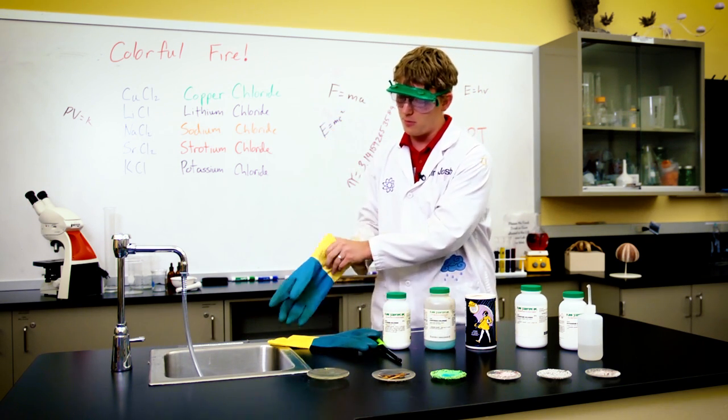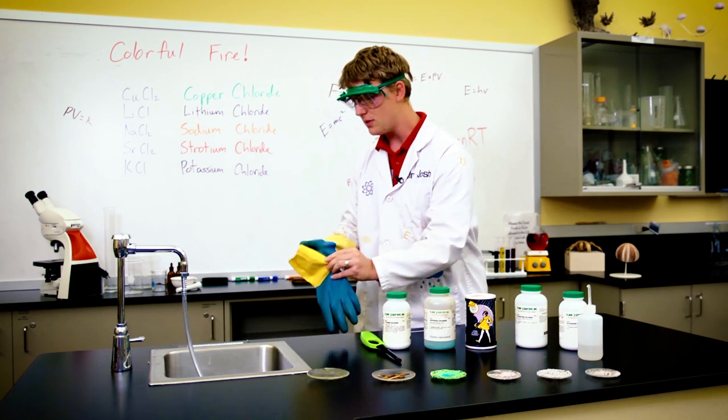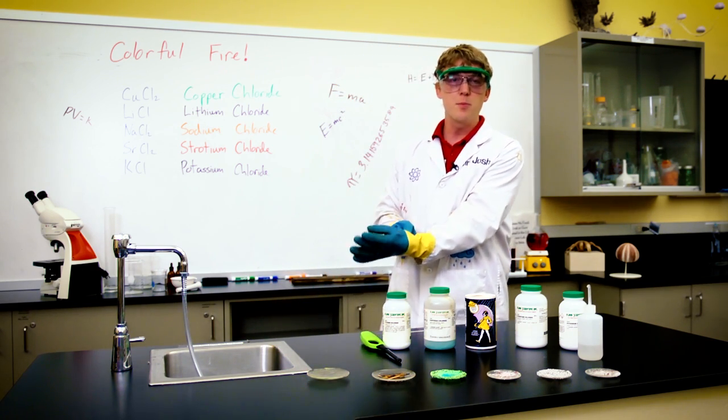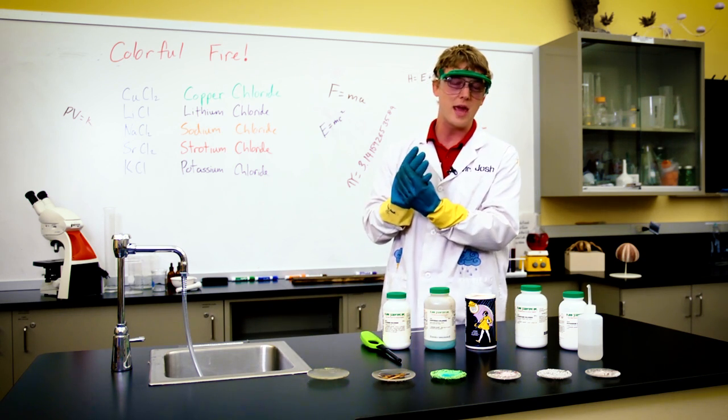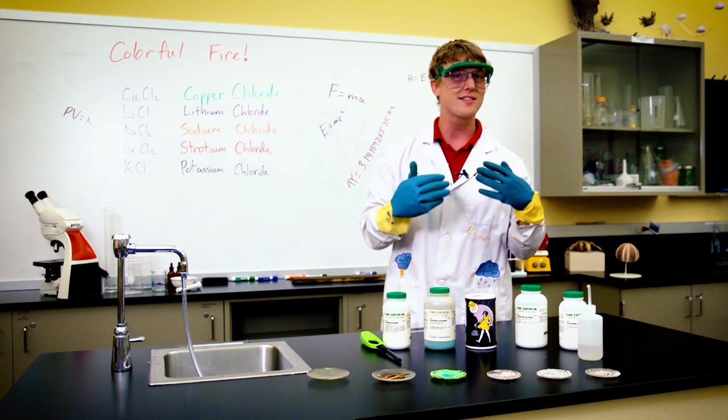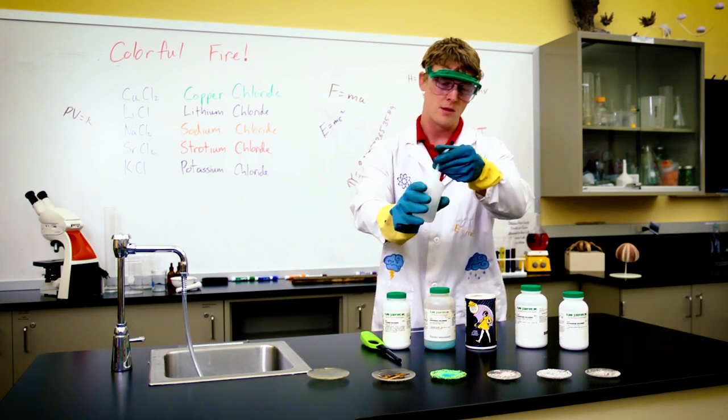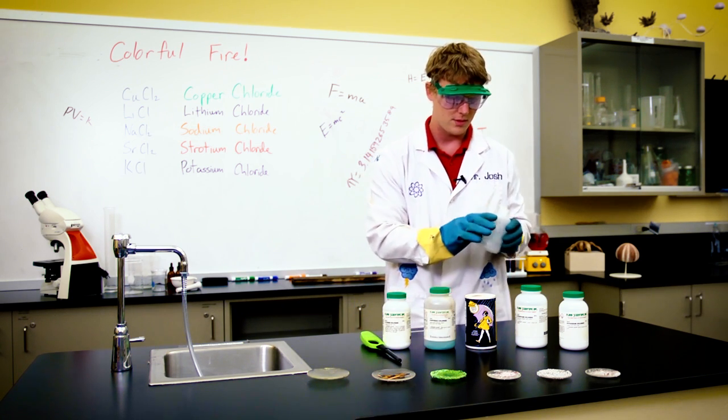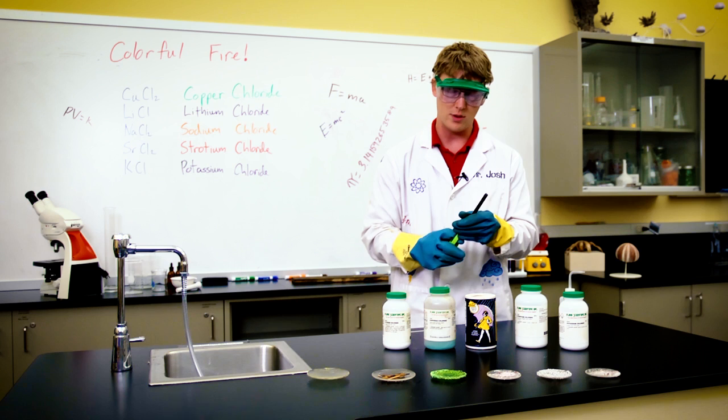So of course we are using fire so I'm going to put on my gloves. Now I like to use denatured alcohol. It burns very blue and almost colorless. You can't see it very well, which really accents the colors of the elements. So here we go, a little bit of denatured alcohol. And we'll light it.